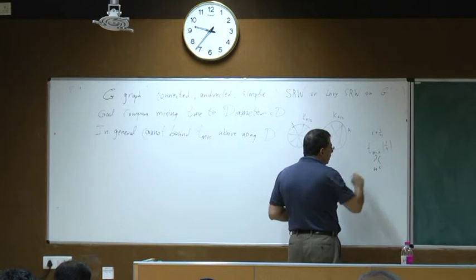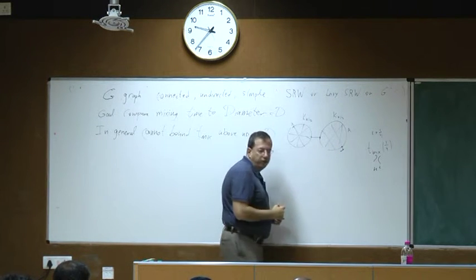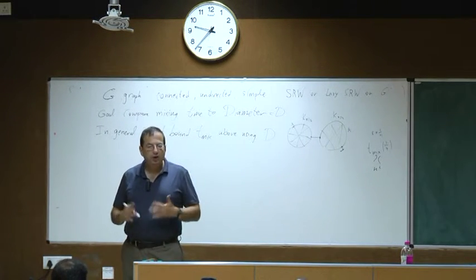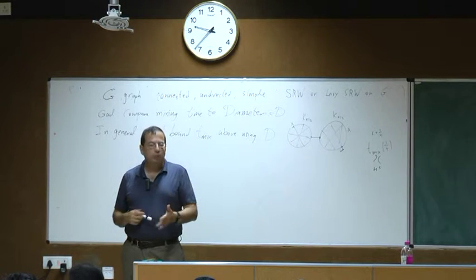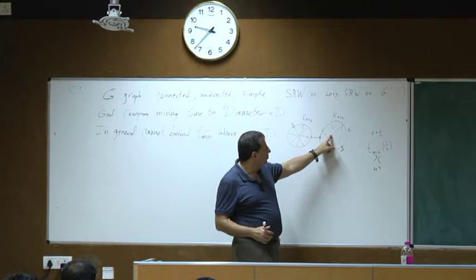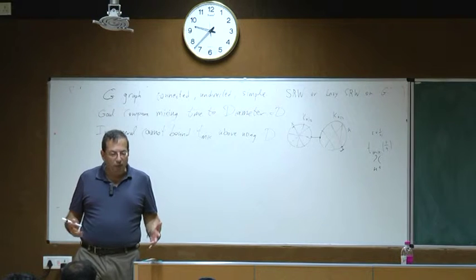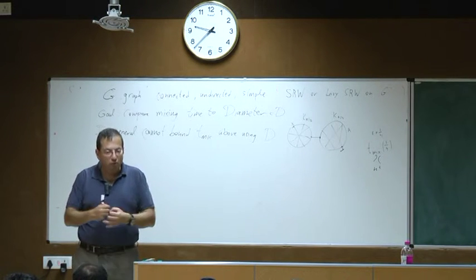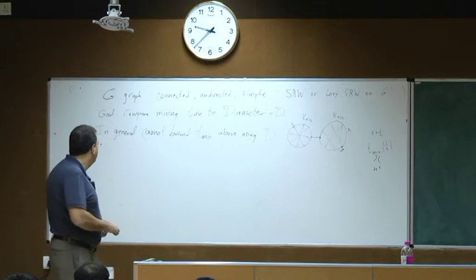On the other hand, it's easy to see the mixing time really is of order N² using the coupling method. Start with two particles in the worst case on different sides. By time N², one of them is likely to cross to the other side. Once they are on the same side, we can couple them in essentially one more step. But getting to the same side takes order N², so the mixing time is N². There is no general upper bound on mixing time using diameter alone.